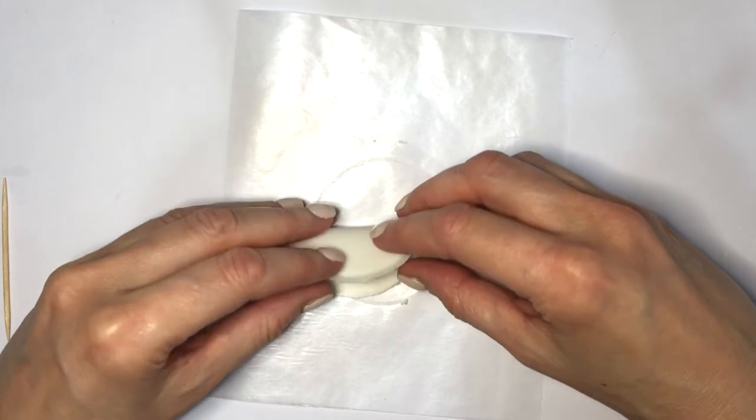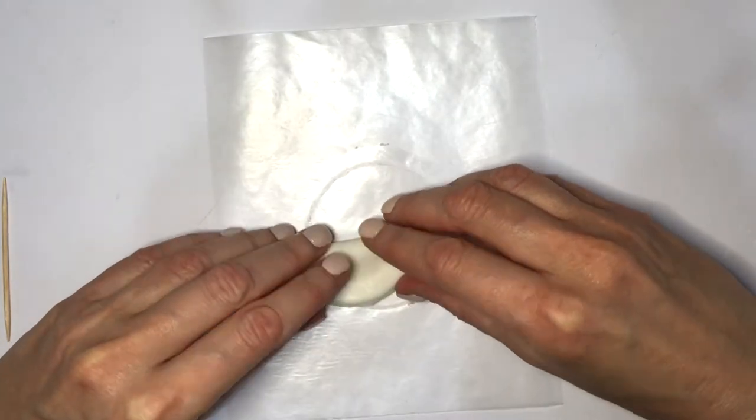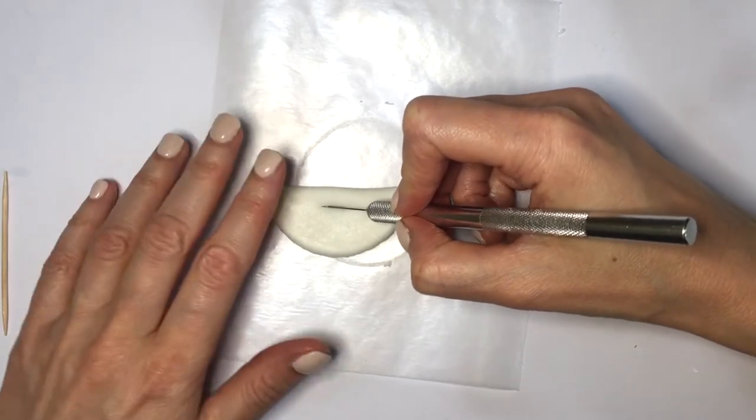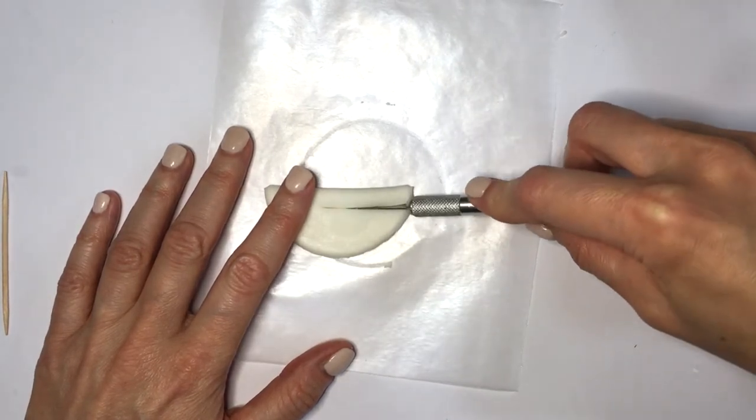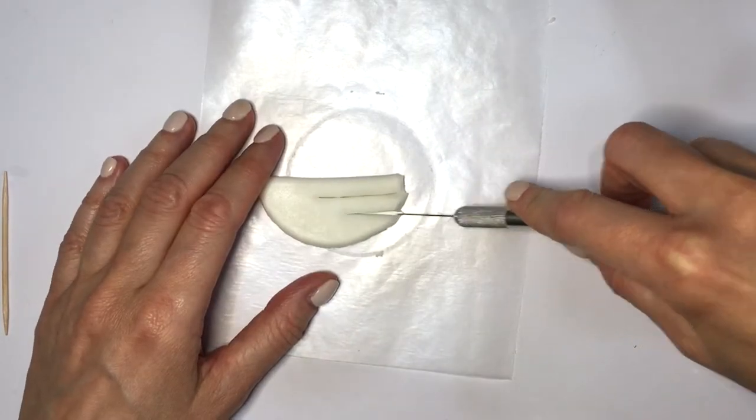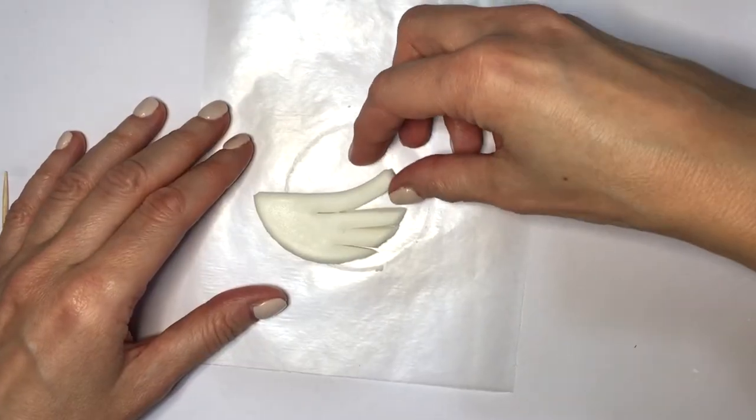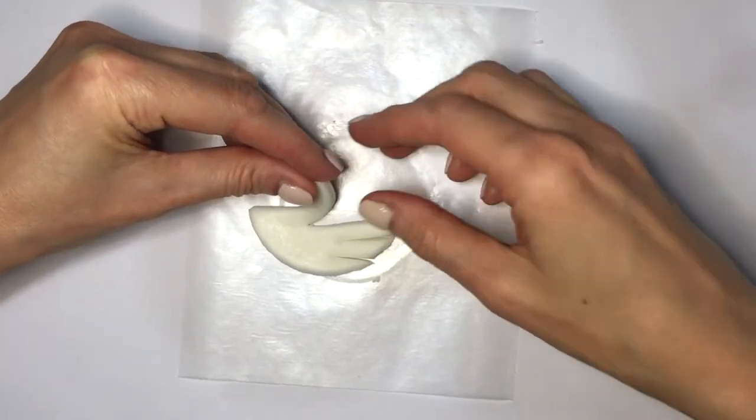Once that's done, I'm going to be folding this in the middle like that. With my exacto knife - you can use any kind of kitchen knife for this as well - I'm going to be making three cuts. The one on top is going to be bigger, and that's going to be the neck and face of my swan.